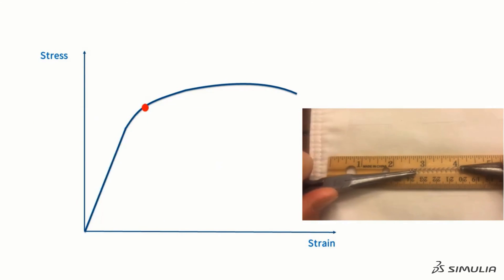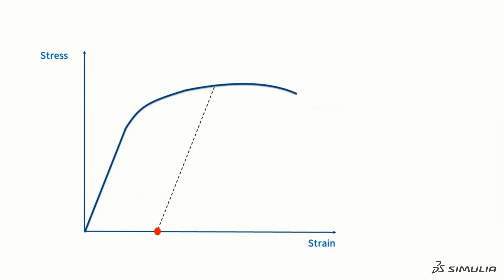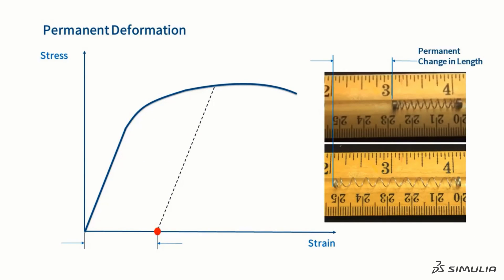For the spring, we continue to load it well beyond the yield point. When we release the load, we follow a new path. Once we remove all of the load, the stress returns to zero, but the strain does not. Physically, we see this as the permanent change in the length of the spring. We call this a permanent deformation.